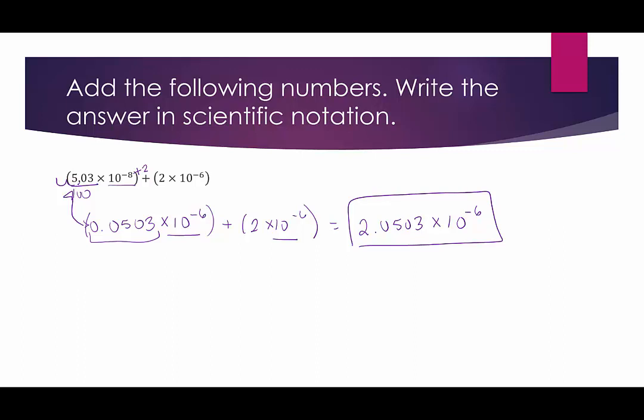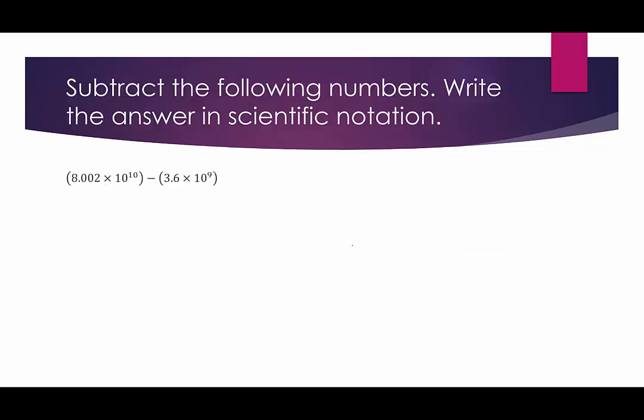In the next example we'll look at option one. We have 8.002 times 10 to the 10th minus 3.6 times 10 to the 9th. We write these in standard form. 8.002 times 10 to the 10th means moving the decimal 10 places to the right — past the digits 8, 0, 0, 2 and then adding seven zeros — giving 80,020,000,000.